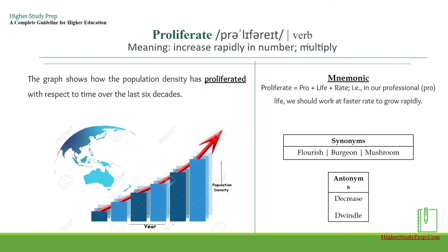Proliferate — it's a verb which means increase rapidly in number or multiply. For example, the graph shows how the population density has proliferated with respect to time over the last six decades. Mnemonic: in order to remember proliferate, we can break it up as 'pro' plus 'life' plus 'rate' — that is, in our professional or pro-life, we should work at a faster rate to grow rapidly. Some synonyms can be flourish, burgeon, mushroom. Some antonyms can be decrease, dwindle.